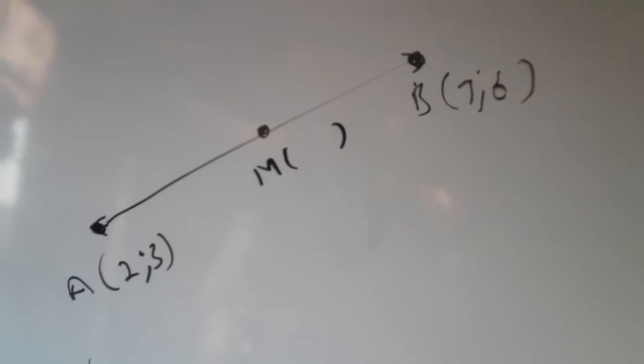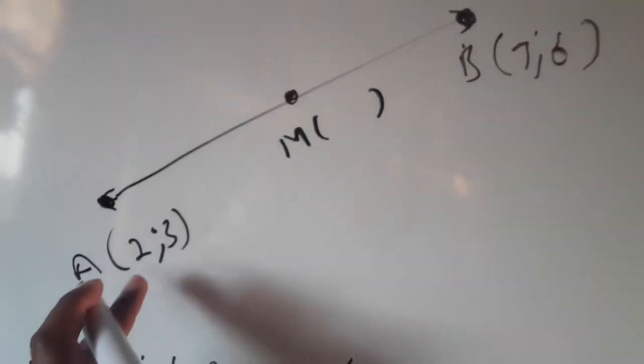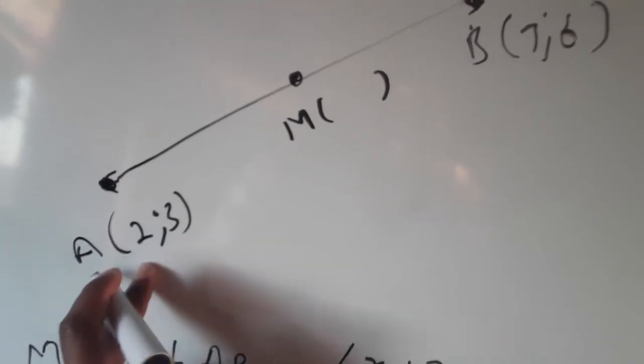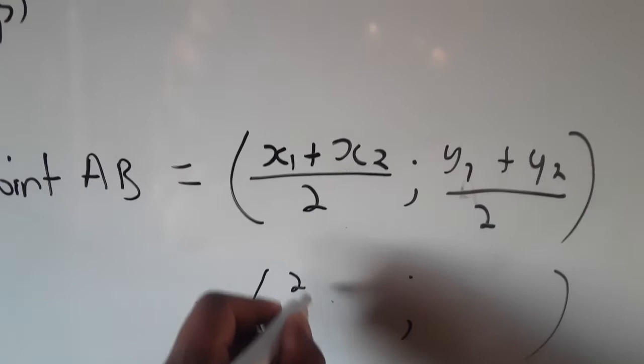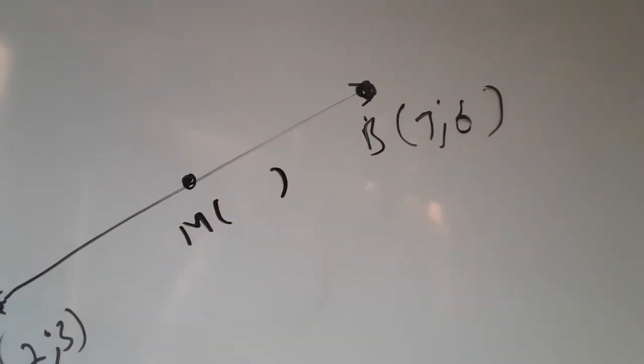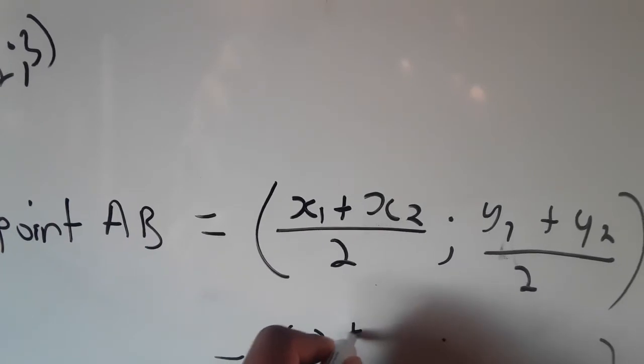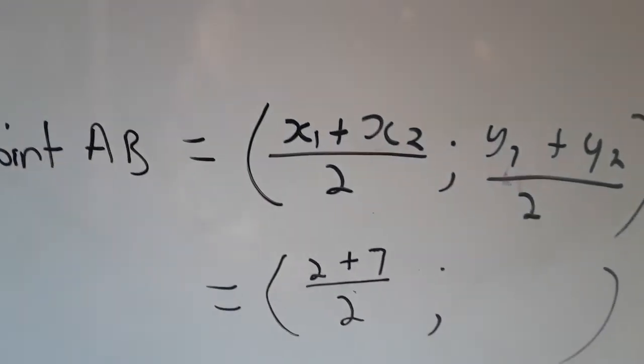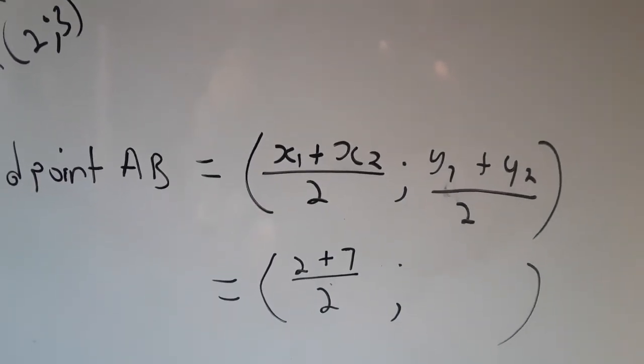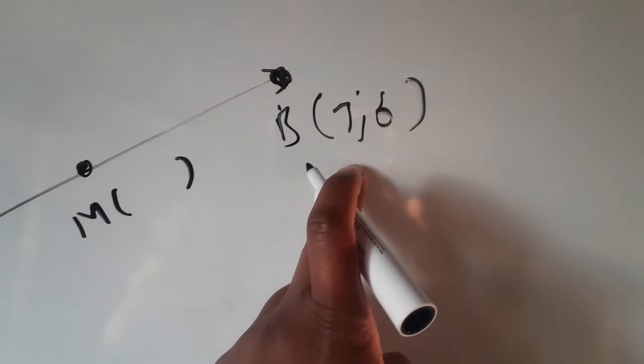So this is what we do: our first value of x is going to be 2, and then the second value of x is 7. So it's 2 plus 7, all over 2.